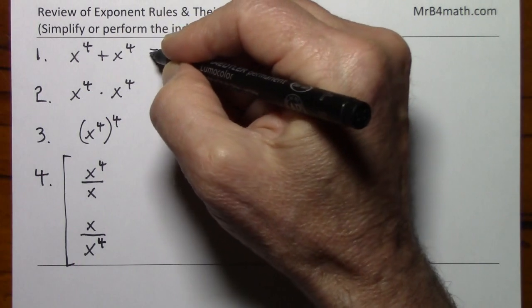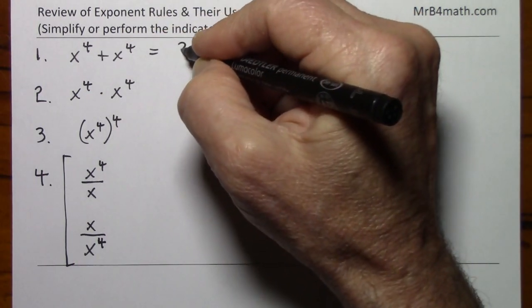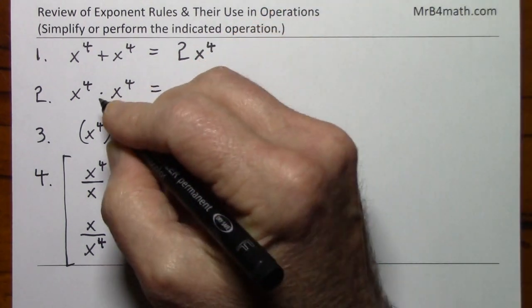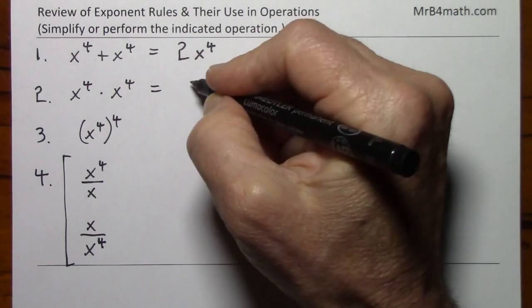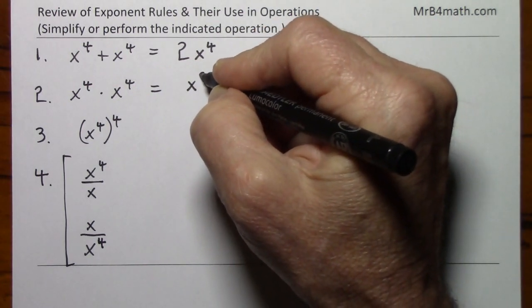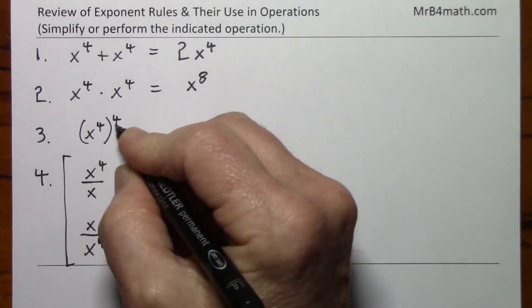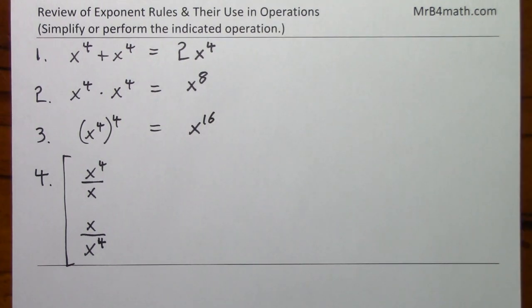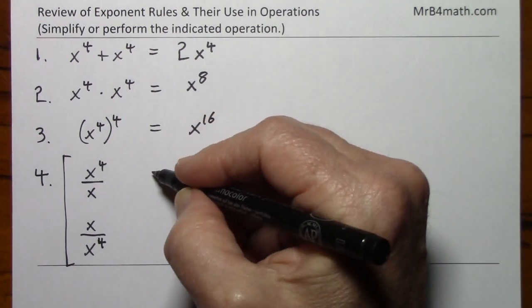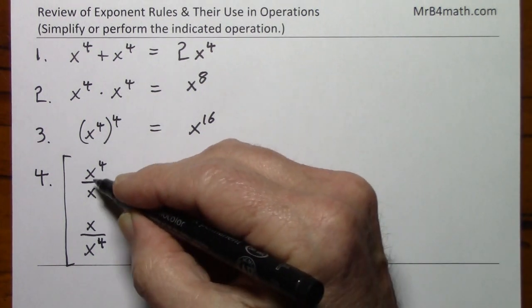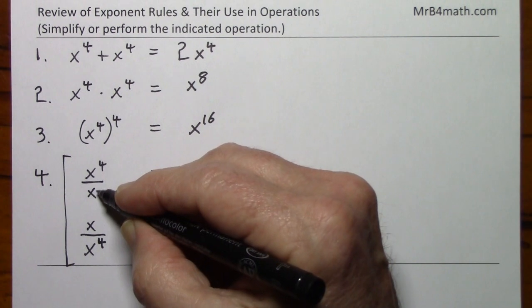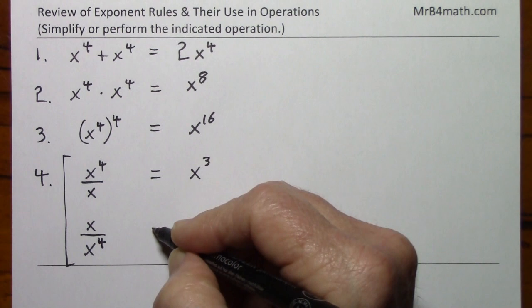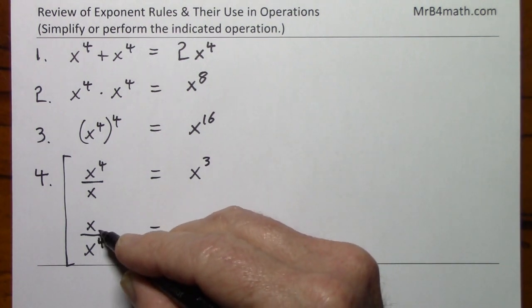If you're adding like bases, you keep the exponent. If you're multiplying like bases, you add the exponents. If you're raising to a power, you multiply exponents. If you're dividing like bases, you subtract exponents. And you have to be careful to subtract the smaller from the larger.